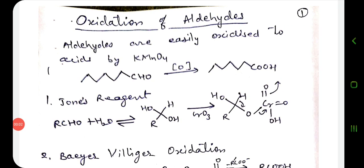Today we will discuss the oxidation of aldehydes. Aldehydes are easily oxidized to acids by permanganate and chromic acid. The permanganate oxidation is usually carried out without addition of a base or an acid. Under these conditions, the solution in certain cases becomes progressively more basic as the reaction proceeds, since hydroxide ion is generated. Hydroxide ion is created and aldehydes are oxidized.